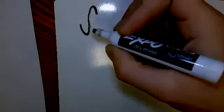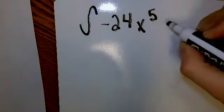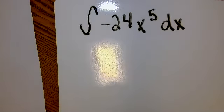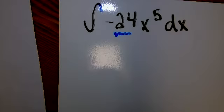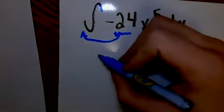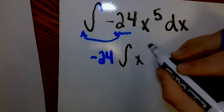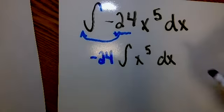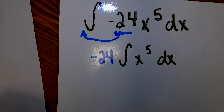So the first example that we're going to start with is going to look like this. We're going to start with the integral of negative 24x to the fifth with respect to x. So first thing you notice is that we have a constant. That constant, because of our constant rule, can be pulled to the outside of the integral. So I can take negative 24 times the integral of x to the fifth with respect to x. So that's one of our properties. That's part of the rewrite process. I'm trying to rewrite this, make it a little easier to take the integral of.